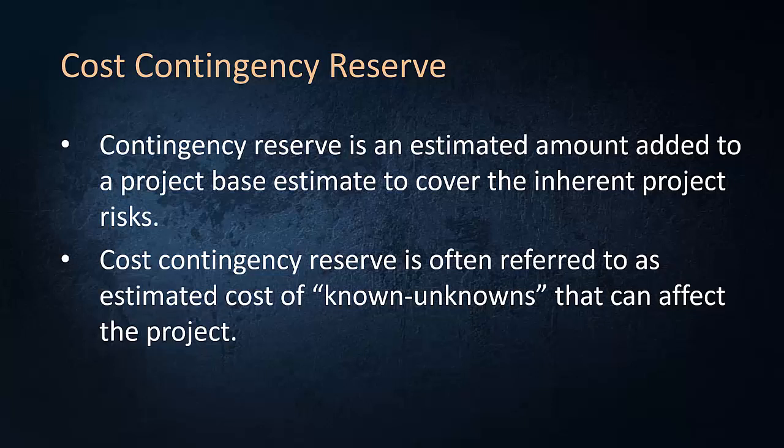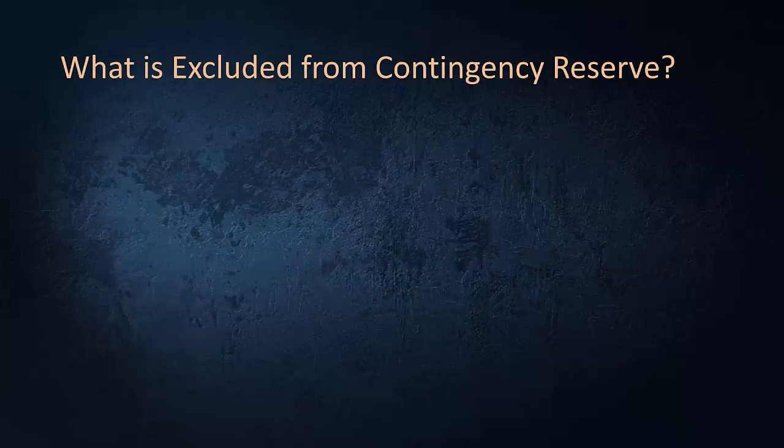An example of the known unknown estimated cost is the cost of rework on some project deliverables. The rework can be anticipated, but the amount of this rework is not known. So the contingency reserve is estimated to account for this known unknown amount of rework. It is important to note that a contingency reserve is only meant to cover the known unknown costs that would be in the project scope of work, but had not yet been defined.